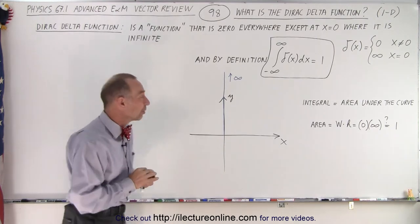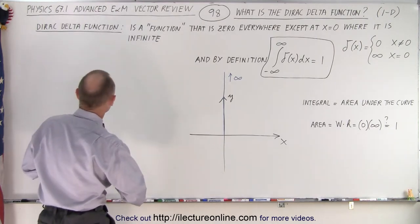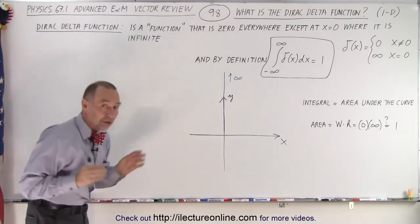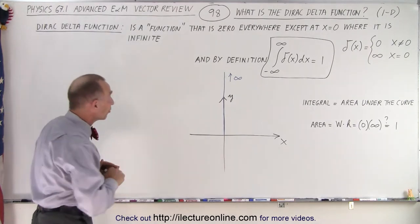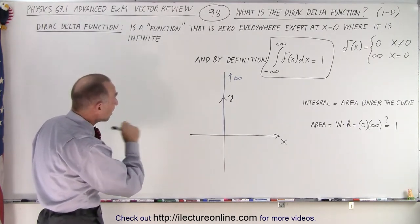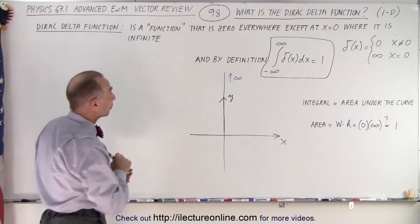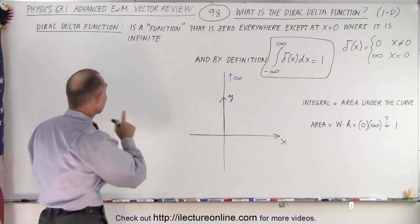Let's explore the definition of the Dirac Delta Function. It is a 'function' - in quotation marks because it really isn't - that is zero everywhere except at x = 0, where it is infinite.